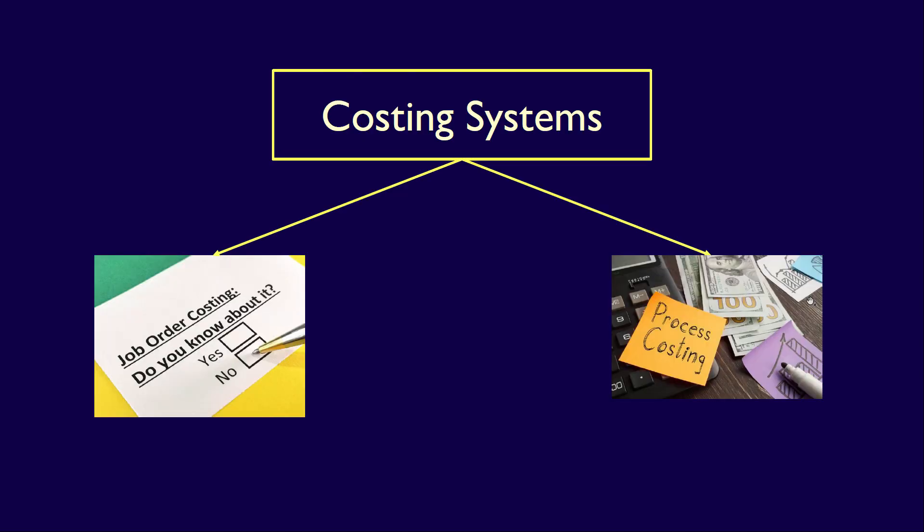Do organizations only use one costing system? The answer is no. They may use both costing systems because they produce both unique products, such as a custom condo, but also produce standardized products, such as identical condos produced in one building. The objective of both systems is to accurately calculate per unit cost, which can then be used to determine not only a product's price, but also the value of ending inventory, and to control costs moving forward.